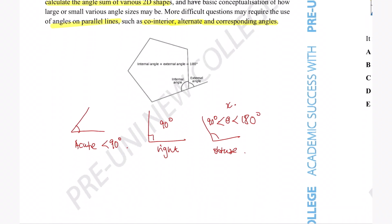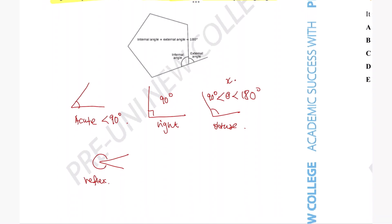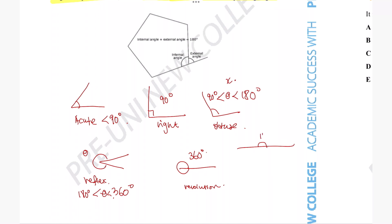The next angle is the reflex angle. Reflex angles are the case where the angle is bigger than 180 degrees but still smaller than 360 degrees. Finally, the revolution is a full 360 degree angle. There would also be the straight angle, which is just a straight line and is exactly equal to 180 degrees.